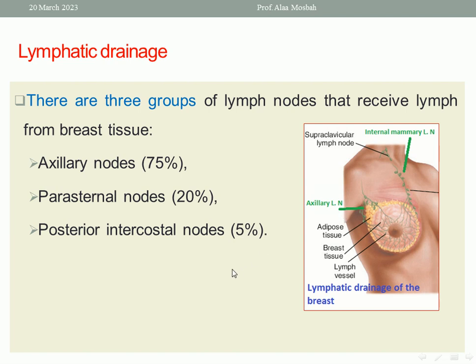There is also a surgical classification: Level 1, 2, and 3, according to their relation to the pectoralis minor muscle. Another classification divides axillary nodes into apical, central, anterior, posterior, and lateral groups.